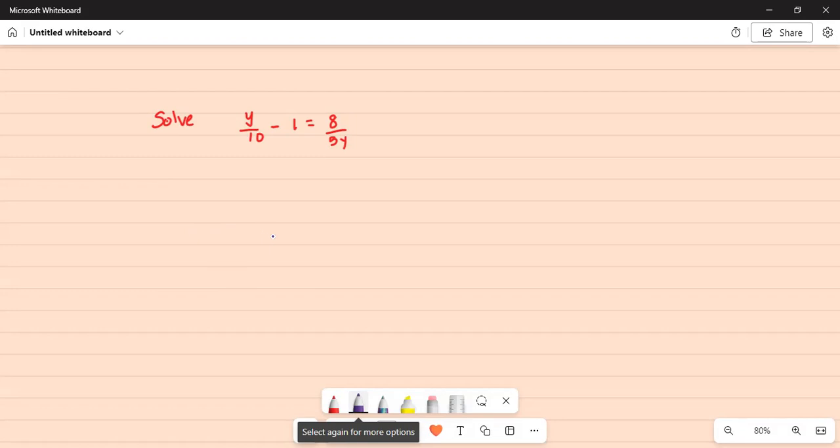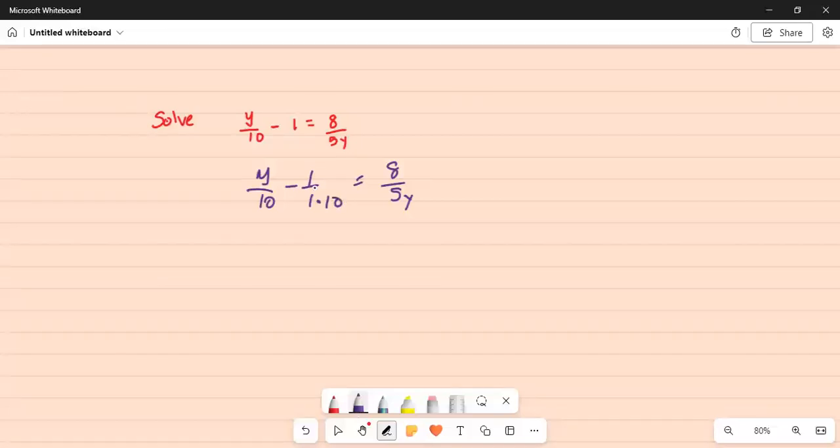We see 10 is in the denominator of the first term and you can assume 1 is under 1. So this can be written as y over 10 minus 1 over 1 is equal to 8 over 5y. We can multiply the numerator and denominator by the same term which is 10 in the second term on the left hand side. So now it becomes y by 10 minus 10 over 10 is equal to 8 over 5y. Since they have a common denominator of 10 these two terms can be simplified as y minus 10 divided by 10 is equal to 8 over 5y.